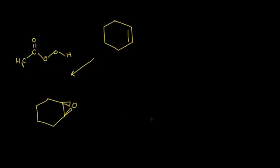If we name our product, the parent name would be cyclohexene. Our epoxide forms between carbons 1 and 2, so we name this 1,2-epoxycyclohexene. Let's do another reaction.